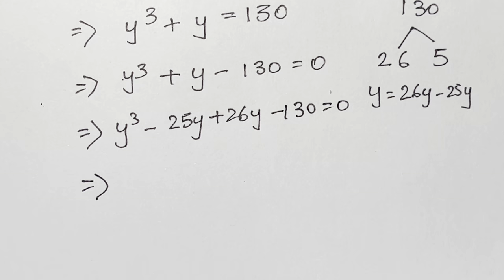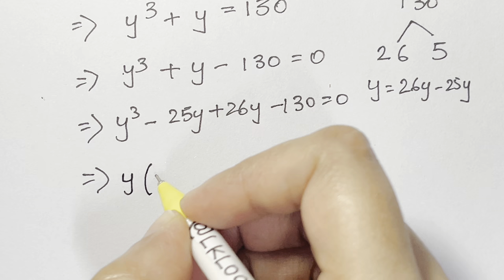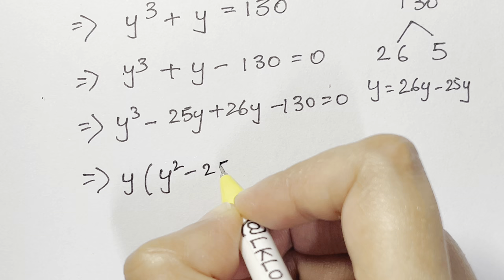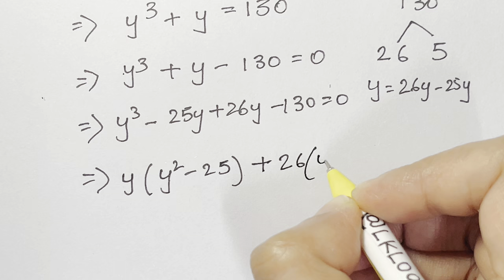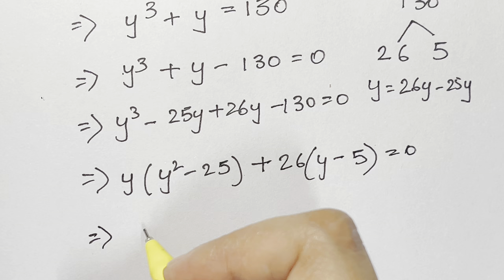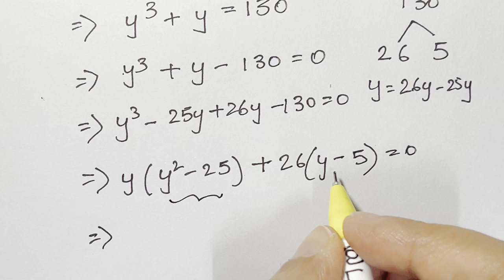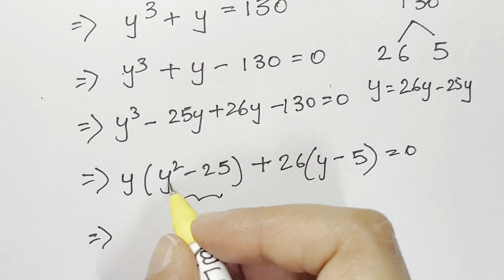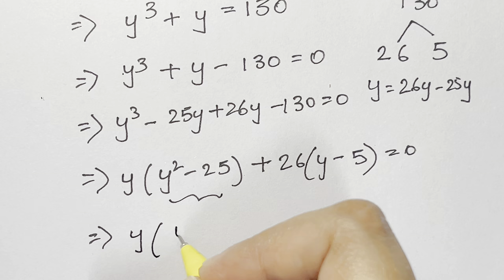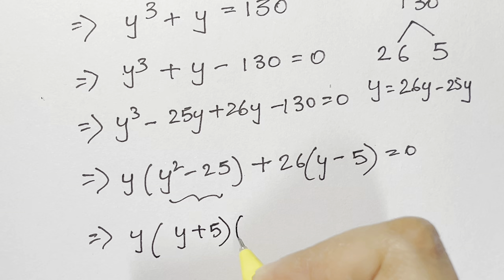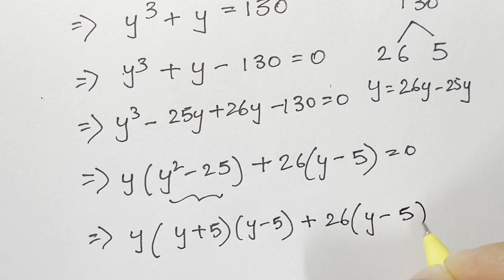Now I take out common factors. From the first two terms I take out y, leaving y squared minus 25. From the last two terms I take out 26, leaving y minus 5. So I have y(y squared minus 25) plus 26(y minus 5) equals 0. I apply the identity a squared minus b squared equals (a+b)(a-b), giving y(y+5)(y-5) plus 26(y-5) equals 0.